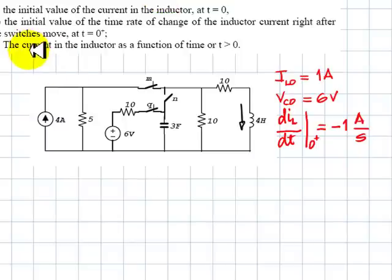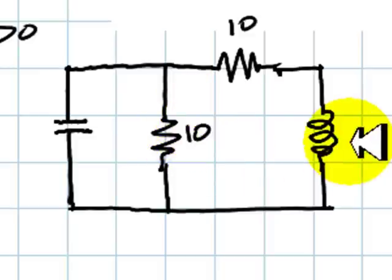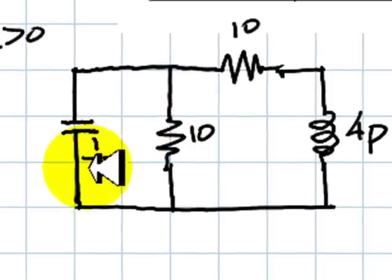The last part is to find the current in the inductor as a function of time after switches operate, while we represent the circuit for t greater than 0 in the P operator domain. This is that circuit for t greater than 0. 10 ohms, 10 ohms, the impedance of this inductor is 4p, the impedance of this capacitor is 1 over 3p.